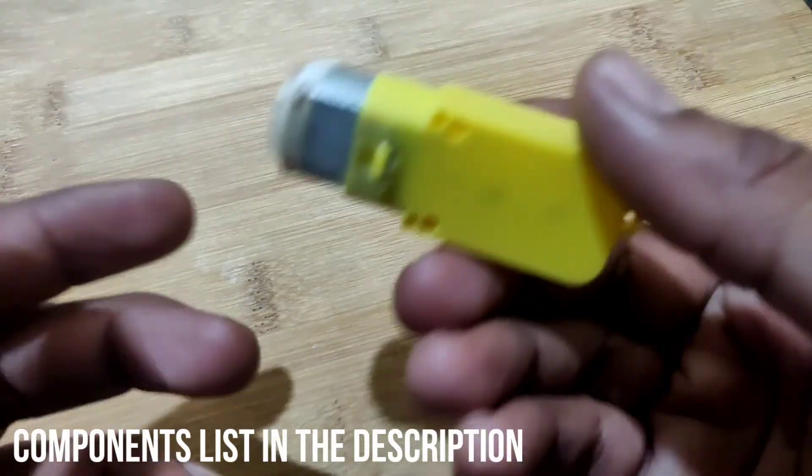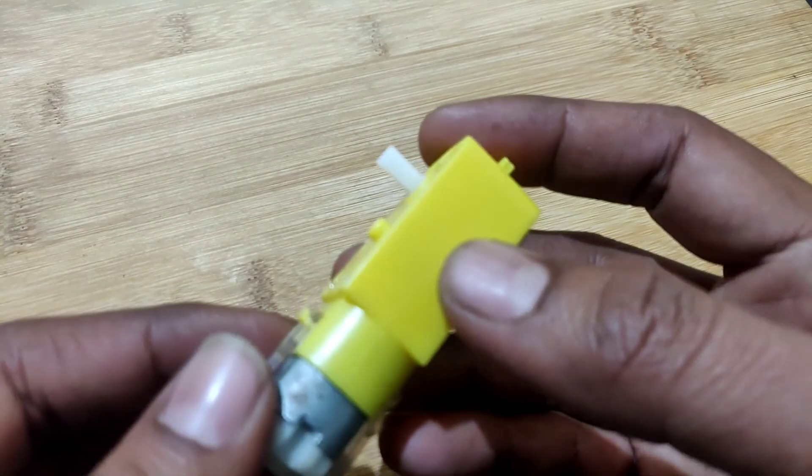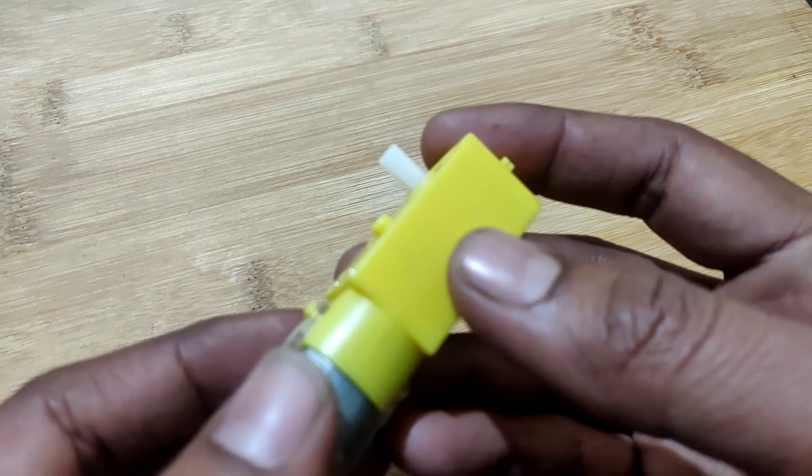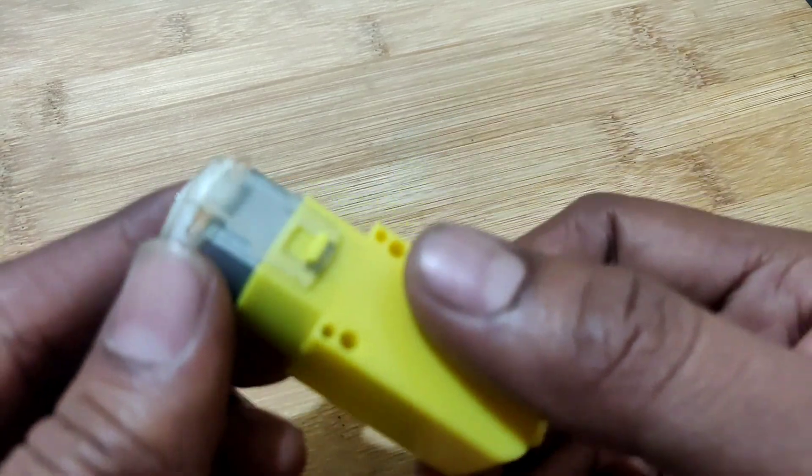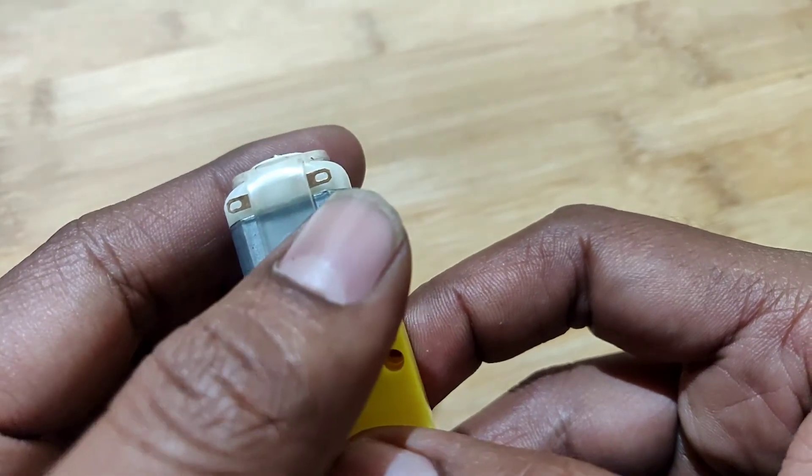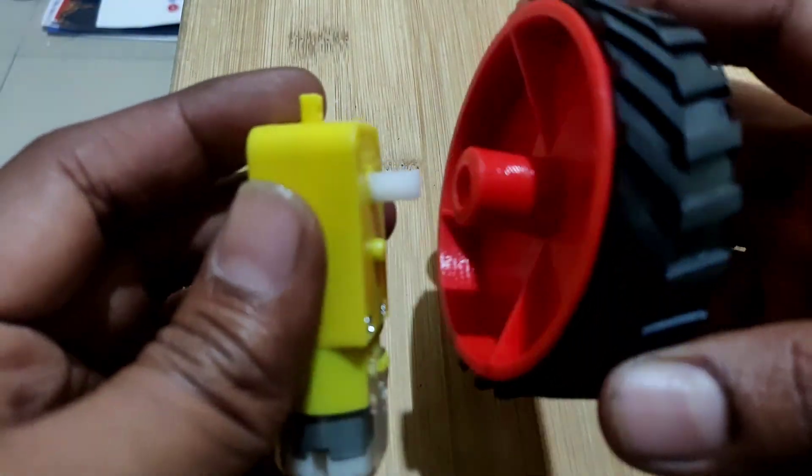Before moving further, let's understand this 5V servo motor. This motor will rotate in clockwise and anti-clockwise direction depending upon how the positive and negative supply is connected to these pins. You can see here, here are the pins. Let's have a look how it works. I am fixing this wheel to this motor.